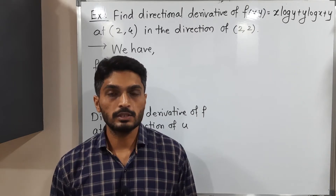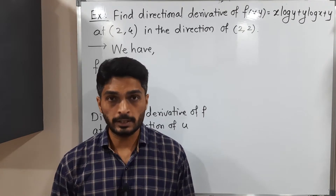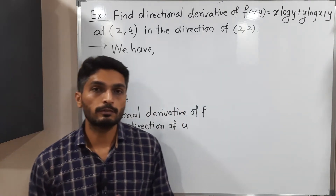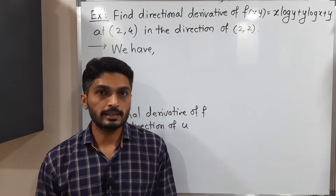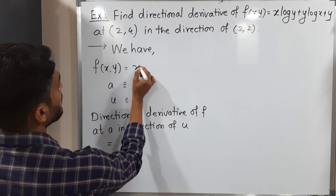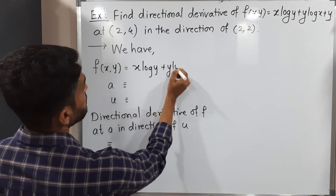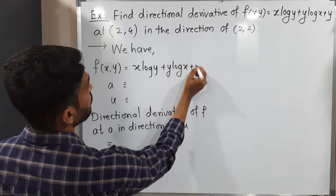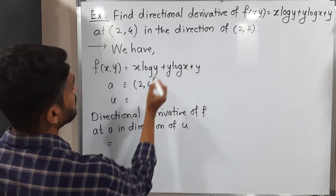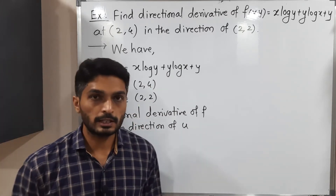Let us discuss this example. We have a scalar field and we have to find its directional derivative at a given point (2,4) and in a direction of (2,2). The given function is f = x·log(y) + y·log(x) + y, the given point is (2,4), and the direction is (2,2). We have to find the directional derivative.